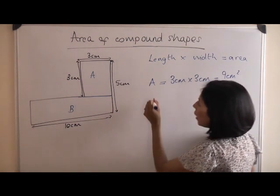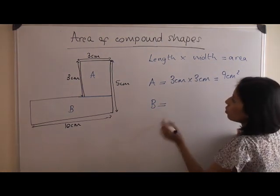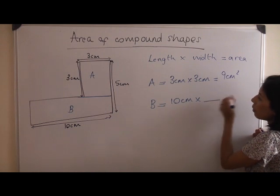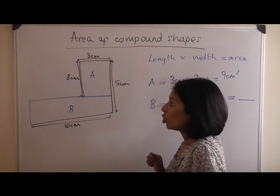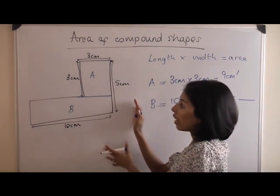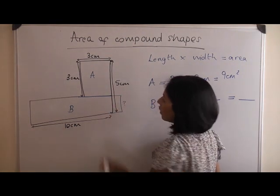However, for shape B, you've only got one of your measurements. 10 centimetres times something equals something. What you need to do is use the figures that you already have to calculate this missing width.